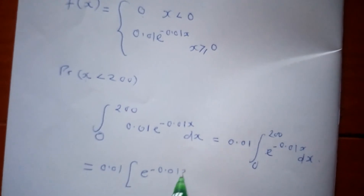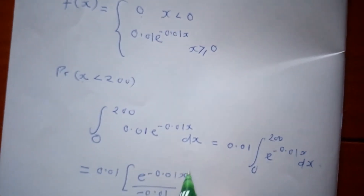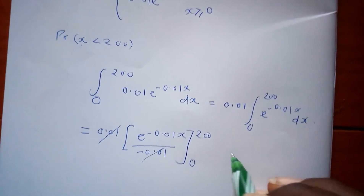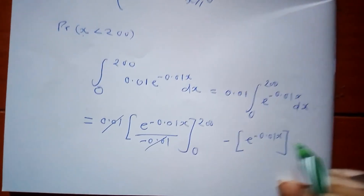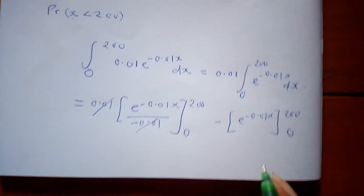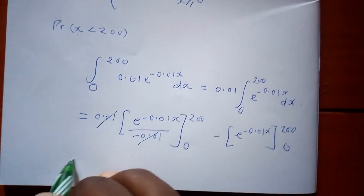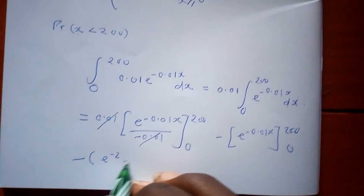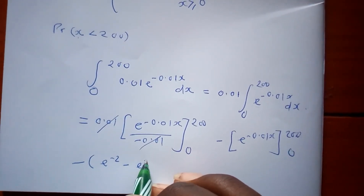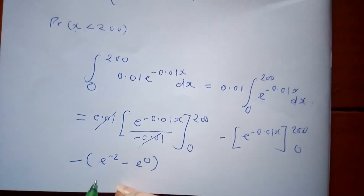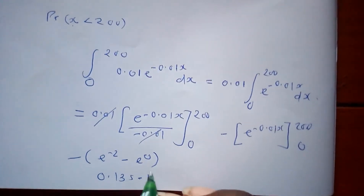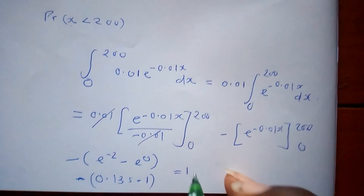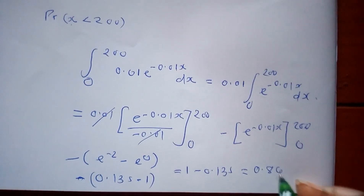After integrating, we evaluate from 0 to 200. Substituting: negative e to the negative 0.01 times 200 minus negative e to the negative 0, which equals negative e to the negative 2 minus negative 1. This gives us 1 minus 0.135, which equals approximately 0.865.